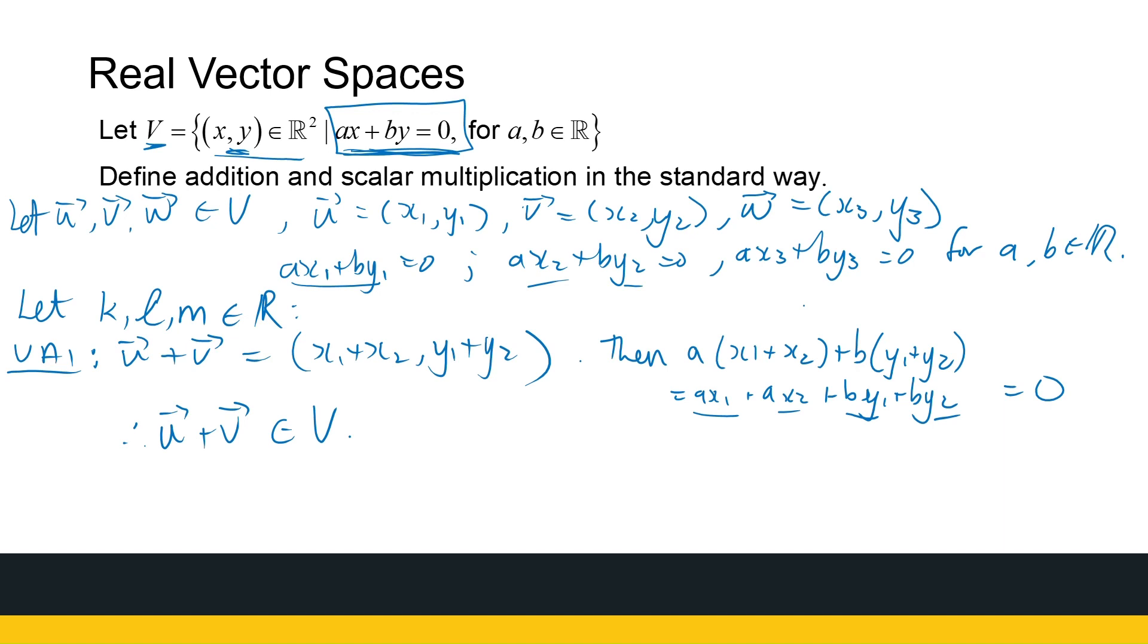You're going to see, does it work? Let's look at my scalar multiplication, my first axiom there. Is it closed on the scalar multiplication? So k times u will be k times (x1, y1). So that's (kx1, ky1).